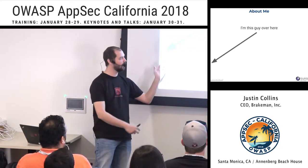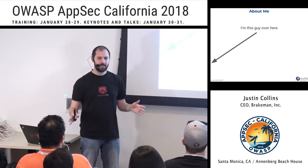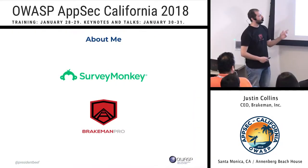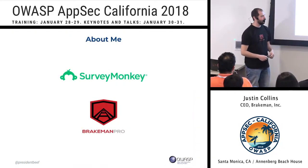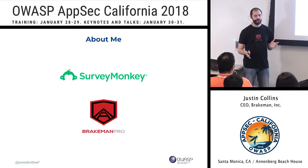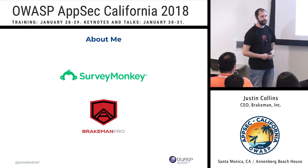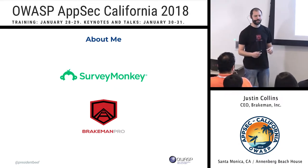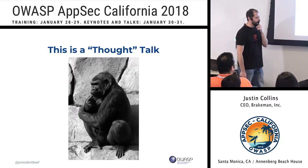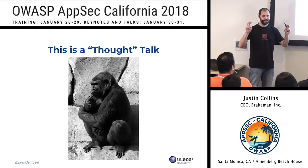A little about me: this is my eighth year of application security. Right now I work at SurveyMonkey and also at my own company building Brakeman Pro. So if you need a static analysis security tool for Ruby on Rails, check out Brakeman Pro. If you need to take surveys, check out SurveyMonkey. I'm a little nervous about this talk because it's more of a thought talk than a concrete talk about things I'm very sure about.